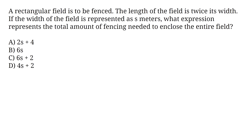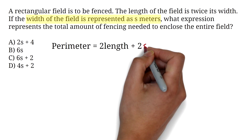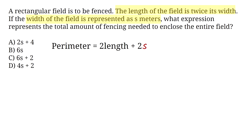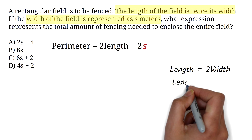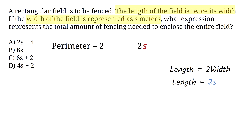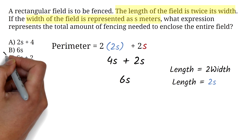Here, we are talking about fencing, so the question is about perimeter. If the question was how much grass will cover the field, we would be looking at the area. The formula for perimeter will be given to you on the GED — it is twice the length plus twice the width. From the question, the width is s and the length is twice its width, so length equals 2s. Substituting into the formula: 2 times 2s plus 2 times s gives us 4s plus 2s, which equals 6s. The correct answer is B.